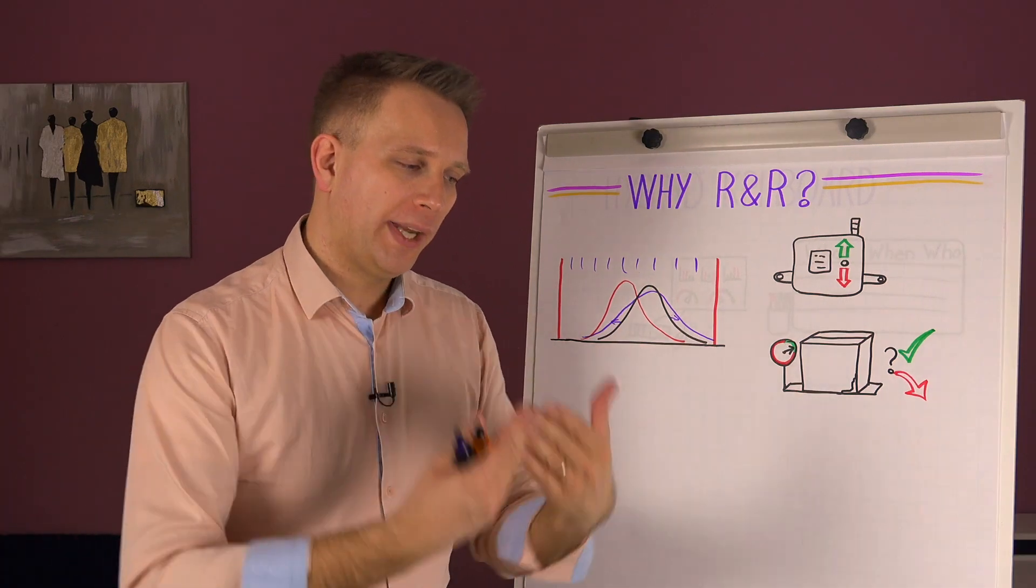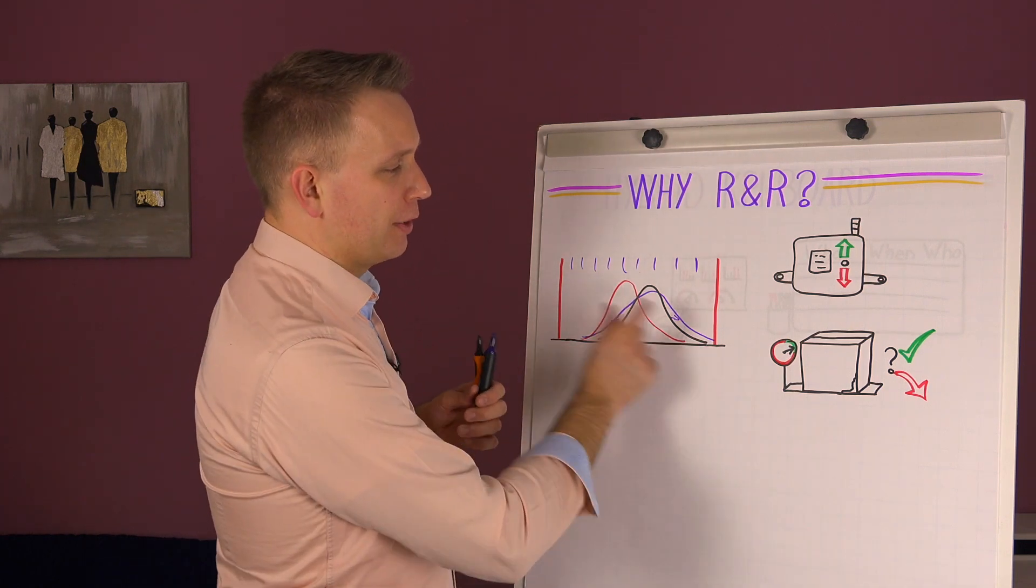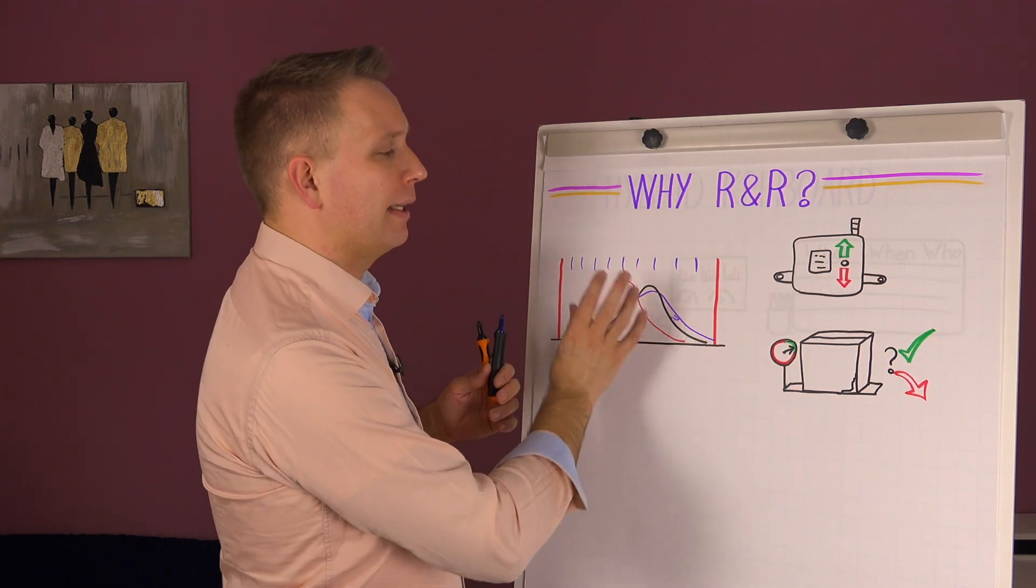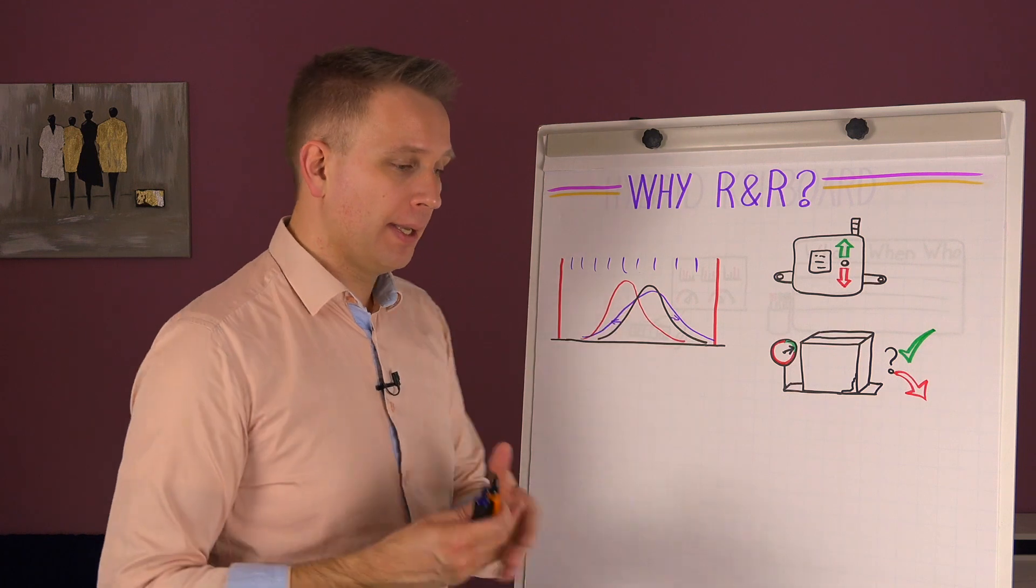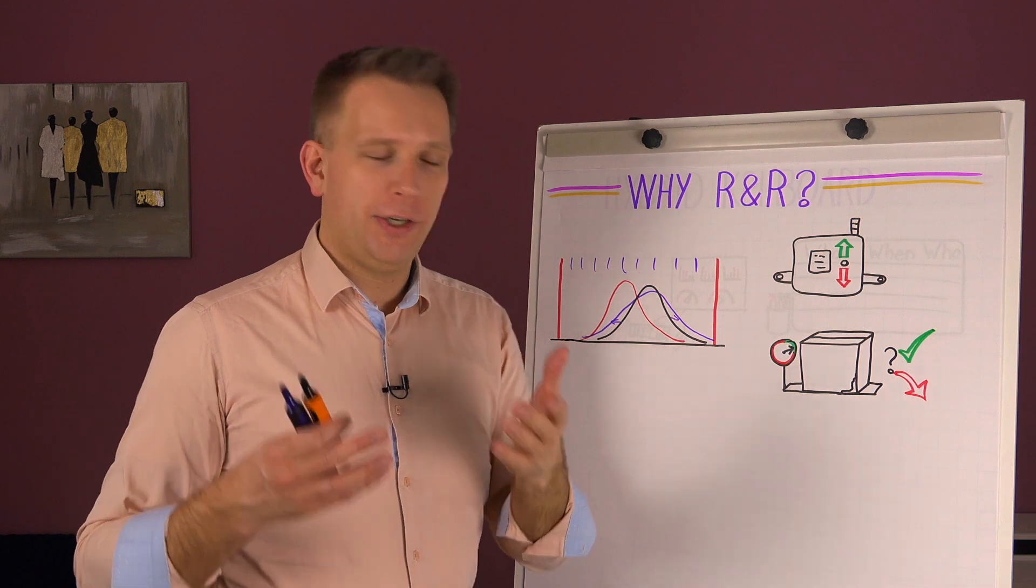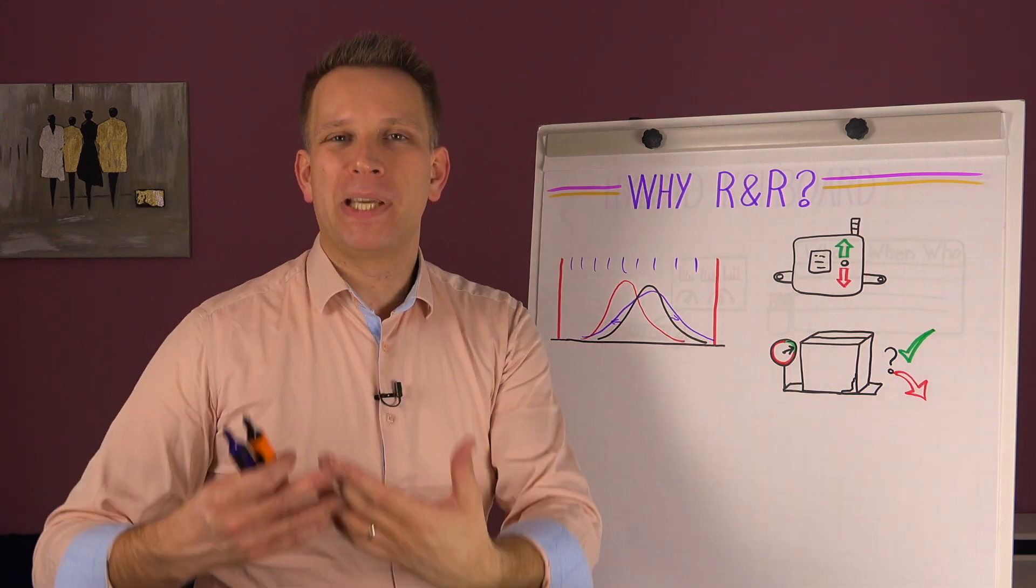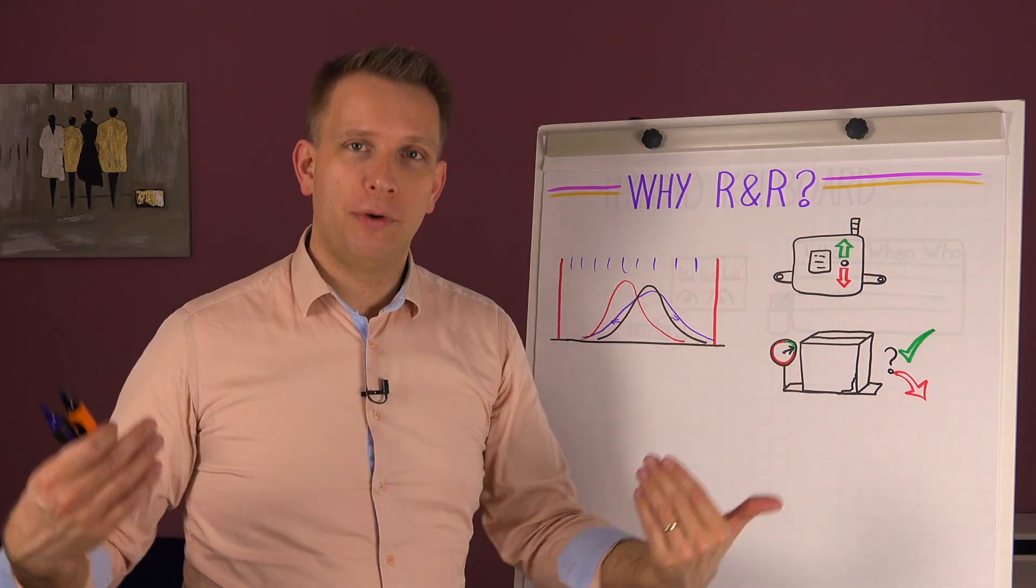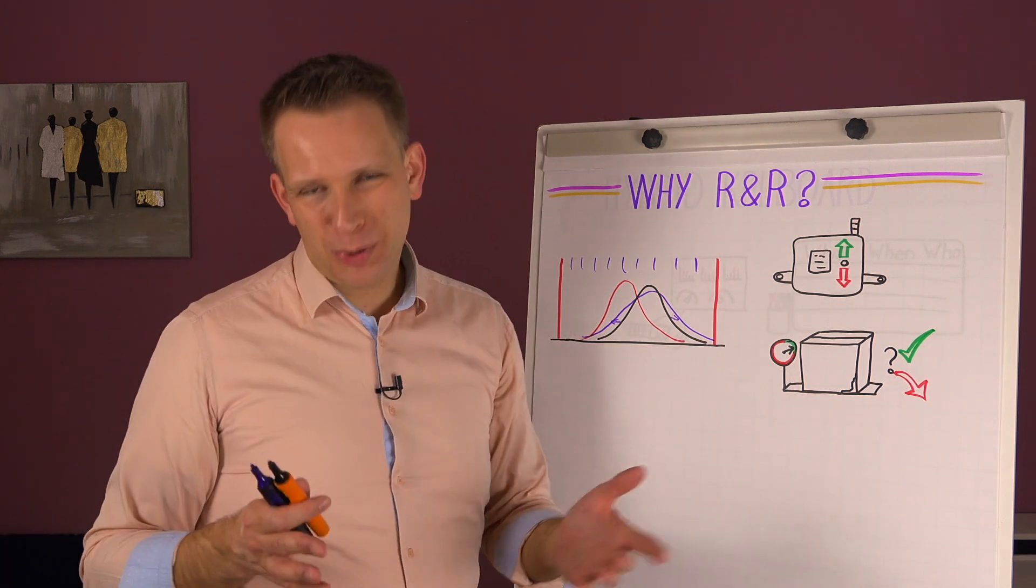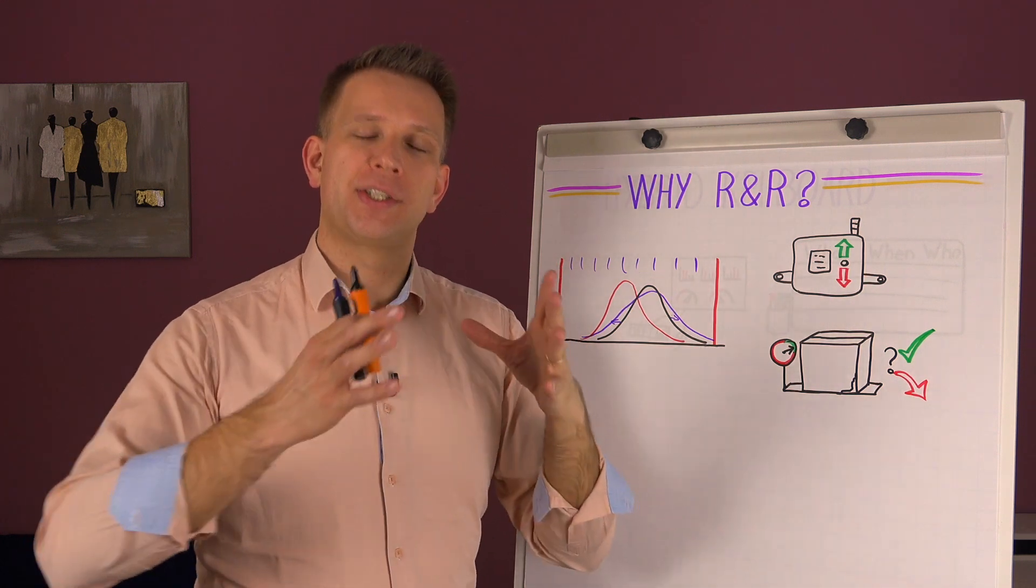So when you have a CPK of 2, that's the easiest to do, that it fits twice, and actually it is correctly centered and fits twice in our specification limits. And that means that you can easily get away with a 20 percent R and R on the ANOVA, so on the distribution itself, because you still then have your 10 percent of the specification range. So a higher CPK means that you can relax a little bit with how completely precise our measurement system has to be.